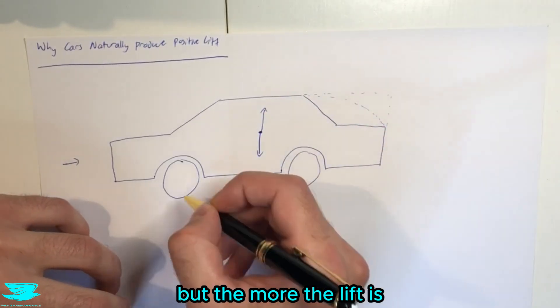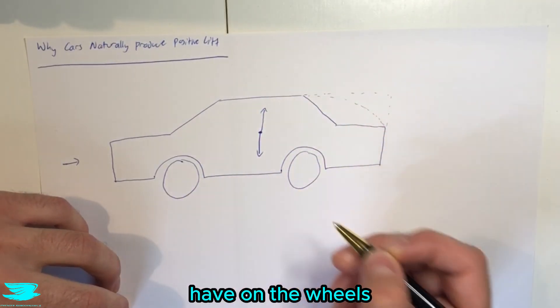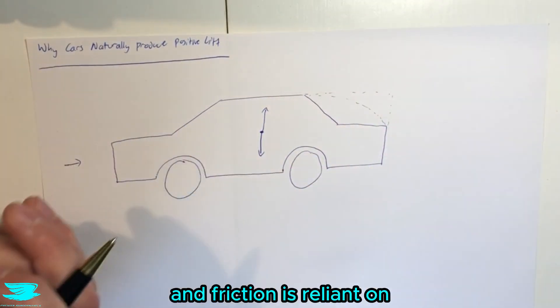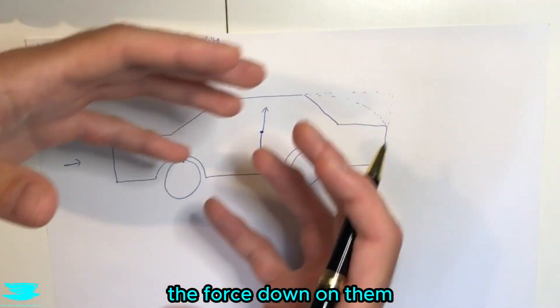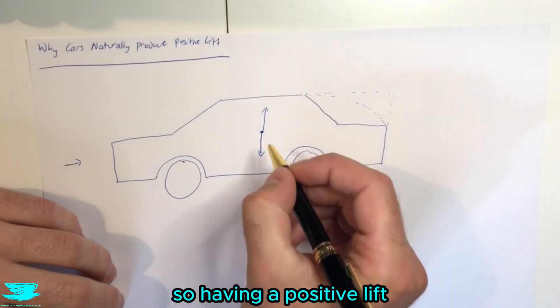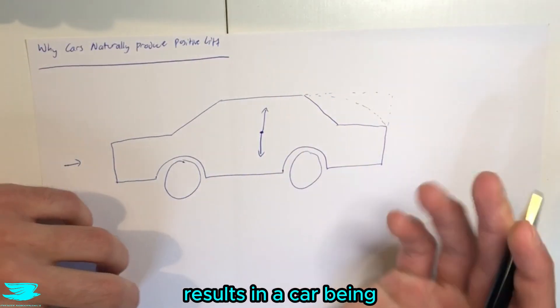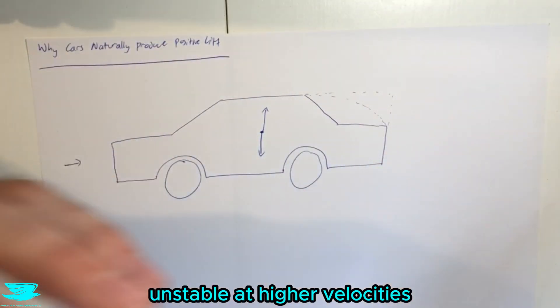But the more the lift is, the less traction we have on the wheels because the wheels are reliant on friction and friction is reliant on the force down on them and the friction coefficient. So having a positive lift results in a car being unstable at higher velocities.